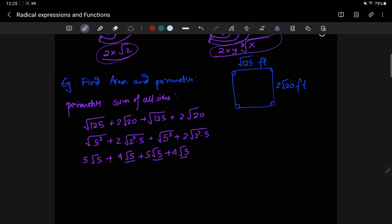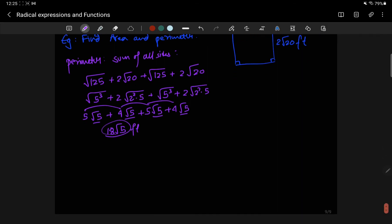These are all like terms, so I end up adding 5 to 4, which is 9, plus 5, which is 14, plus 4, which is 18. So, the perimeter is 18 root 5 feet.